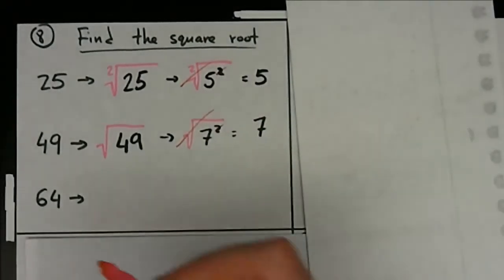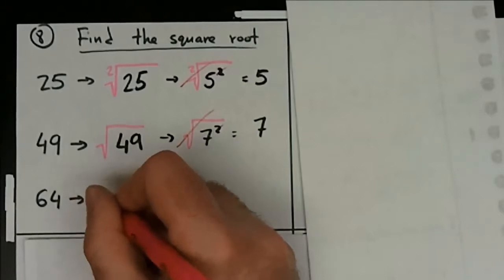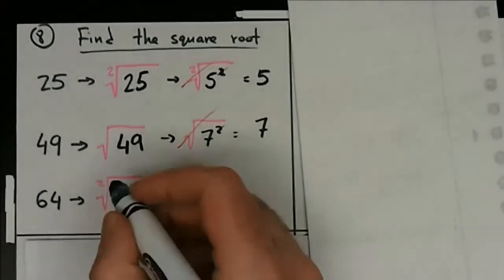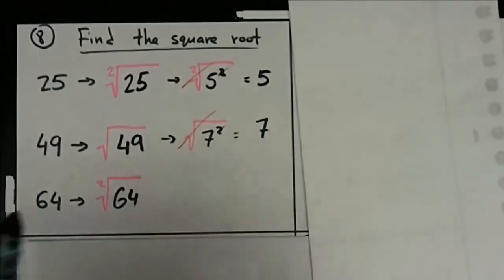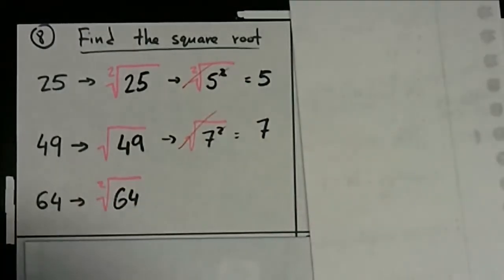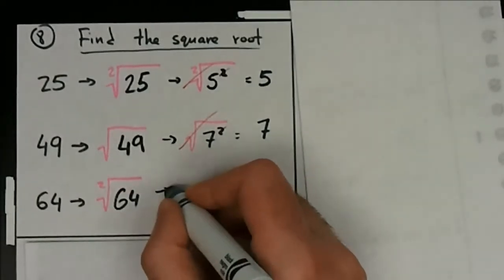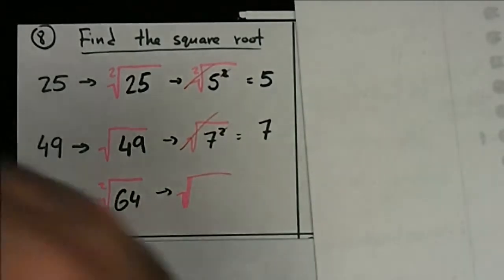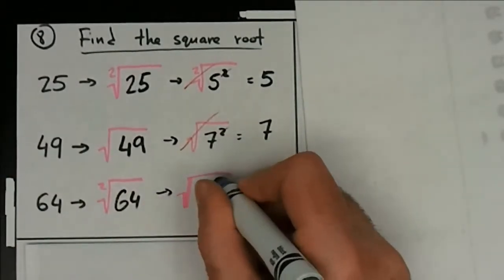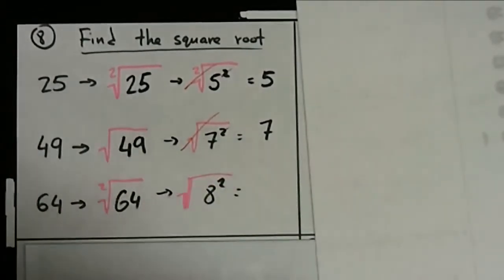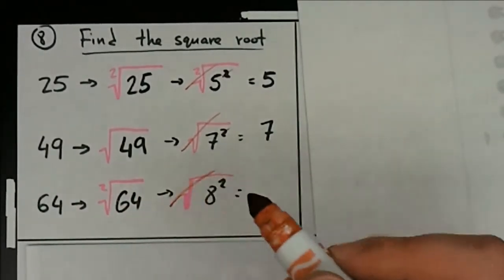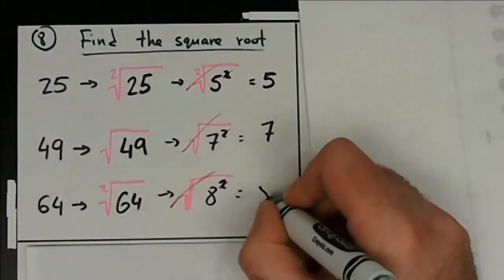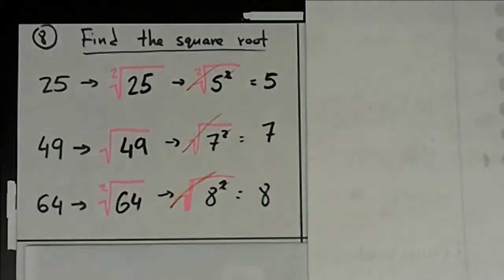For 64, same as the first two. I'm going to write the two this time just so you can see it doesn't really make a difference. The positive exponential form of 64 is eight times eight or eight squared. Cancel out the radical and the exponent of two, and the answer is 8. Those are the answers for number eight.